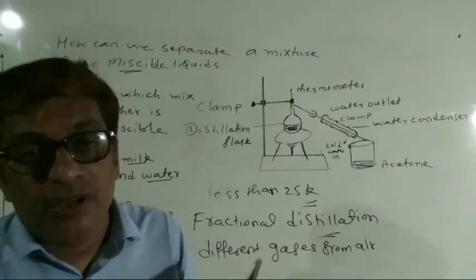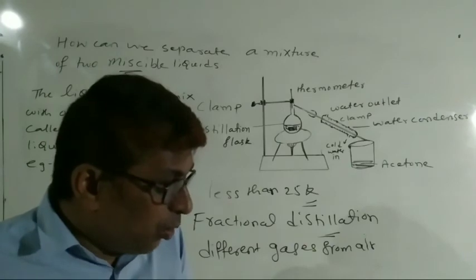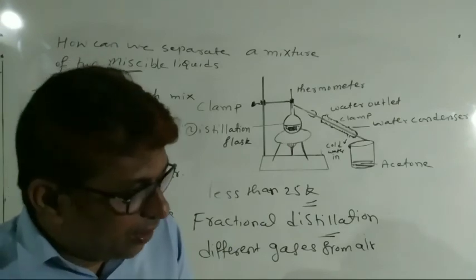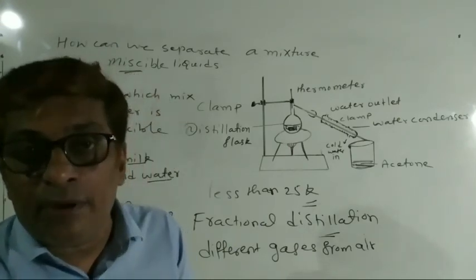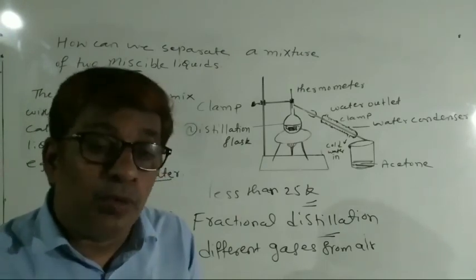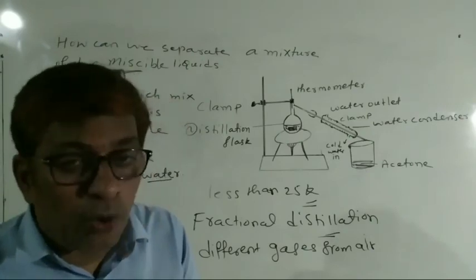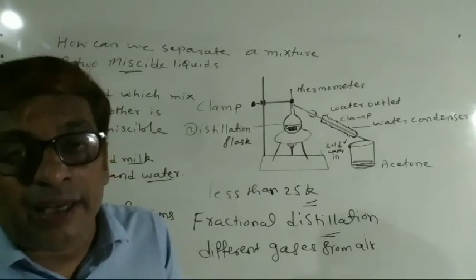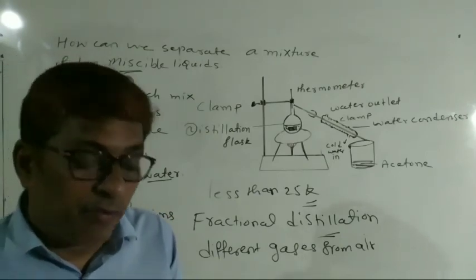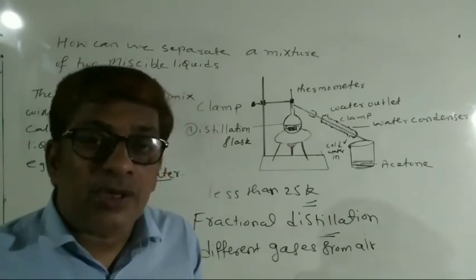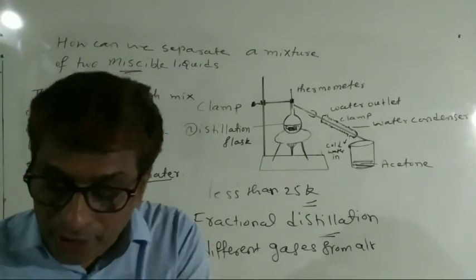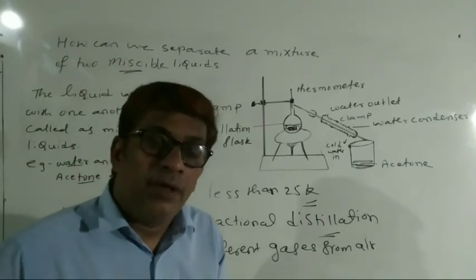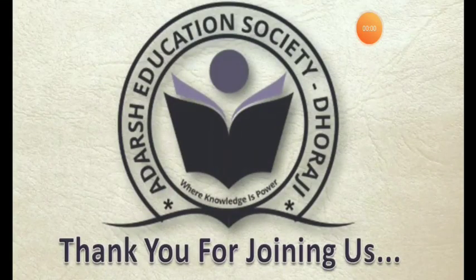Fractional distillation. Dear students, today we have learned how to separate a mixture of two immiscible liquids, how to separate a mixture of salt and camphor, how to separate two miscible liquids by distillation, and how to separate two or three miscible liquids when the boiling point difference is less than 25 Kelvin. Okay students, go through it, read properly, and try to understand the process. Bye-bye. Thank you for joining us.